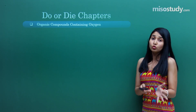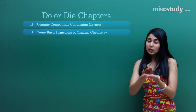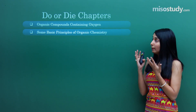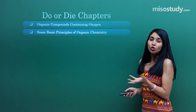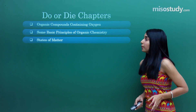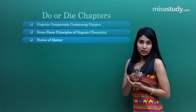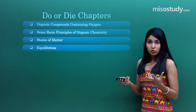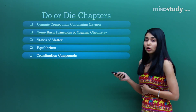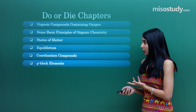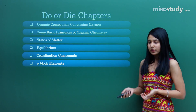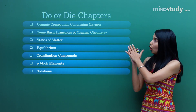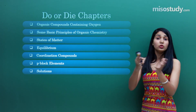The most important thing — the do-or-die chapters. Whether you have done them or not doesn't matter; we still have 30 days, and 30 days into 24 hours is a huge amount of time. The most important chapters include: organic compounds containing oxygen — aldehydes, alcohols, and those sections; basic principles; states of matter; equilibrium; coordination compounds; and p-block elements. I've covered sections from organic, inorganic, and physical chemistry, as well as solutions.